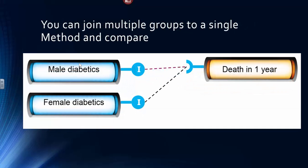You can have a group, such as male diabetics and female diabetics, each member having his own indexed state, and these are all connected to an analysis of death in one year.